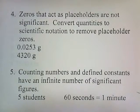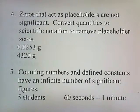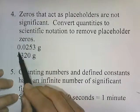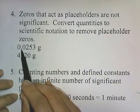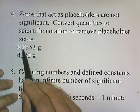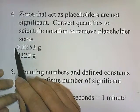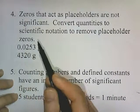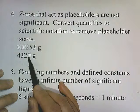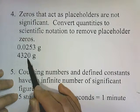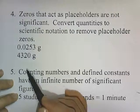Zeros that act as placeholders are not significant. You have to convert the quantities to scientific notation to remove placeholder zeros. So if you look at this number, you see this zero and say it's behind a decimal — but it has to be behind a decimal and a number. This zero is behind another zero, so it doesn't count. Likewise, this zero is behind a number but it's not behind a decimal, so this zero doesn't count.